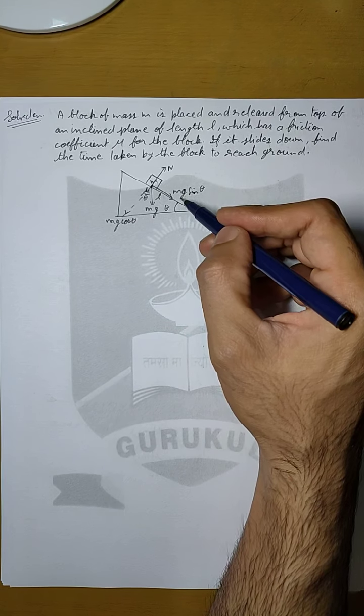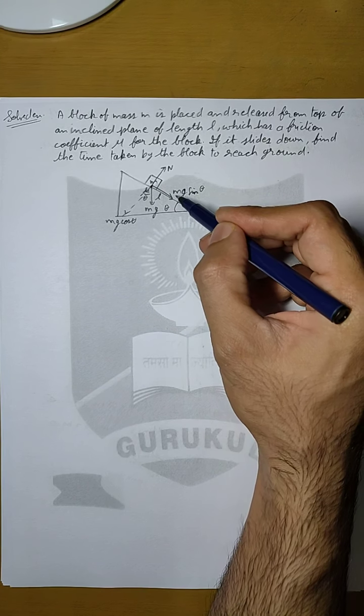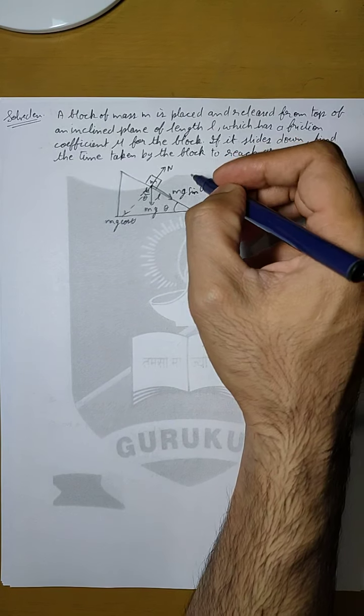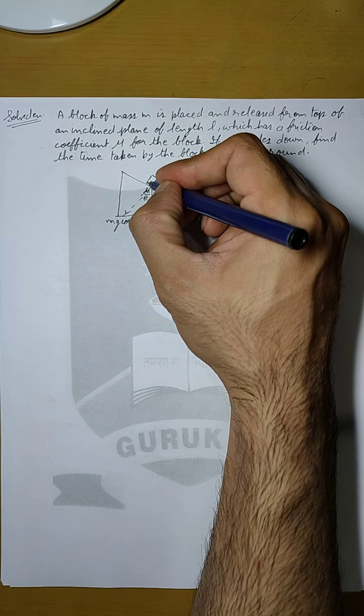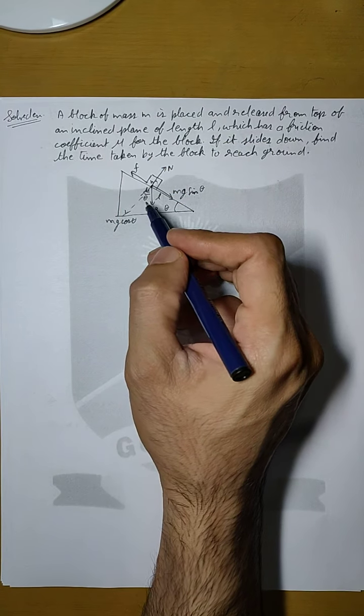Now this Mg sin theta is the force which will be applied on the block to make it move. So Mg sin theta has the tendency to make the block move in downward direction. So that means because of Mg sin theta there will be a friction in upward direction which will be equal to mu N.